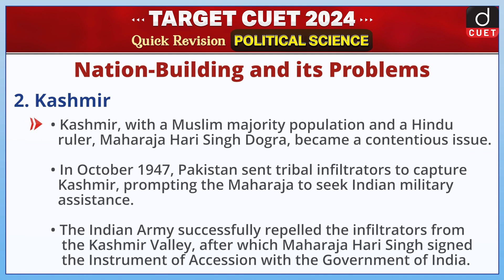Kashmir, with a Muslim majority population and a Hindu ruler, Maharaja Hari Singh Dogra, became a contentious issue. In October 1947, Pakistan sent tribal infiltrators to capture Kashmir, prompting the Maharaja to seek Indian military assistance. The Indian army successfully repelled the infiltrators from the Kashmir valley, after which Maharaja Hari Singh signed the Instrument of Accession with the Government of India.